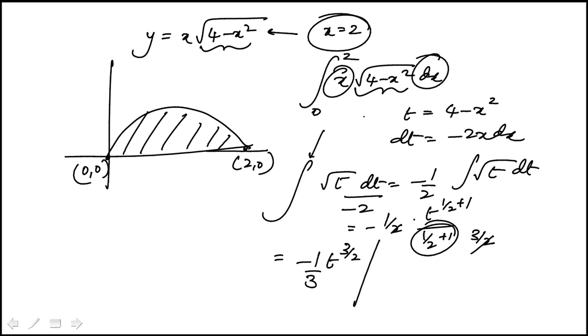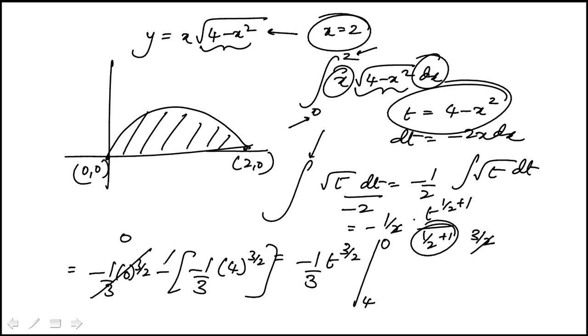I can find the values of t from this relationship. So when x is 0, this would be 4, this would be 0, and I would plug in 0 to the 3 over 2 minus minus 1 third 4 to the power of 3 over 2. You'll see this is 0, and this minus and minus becomes plus, and we end up with 1 third 4 to the power of 3 over 2.